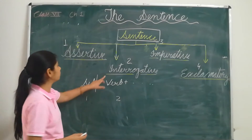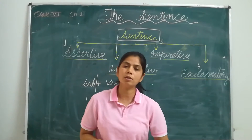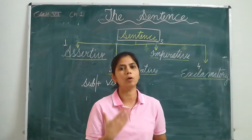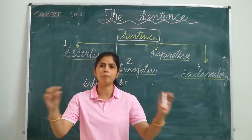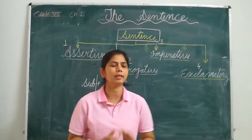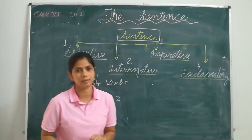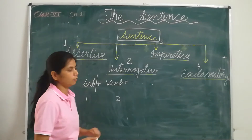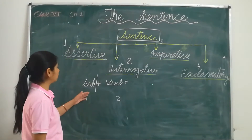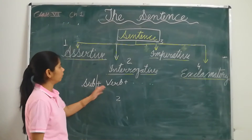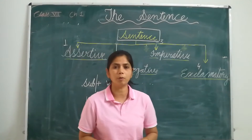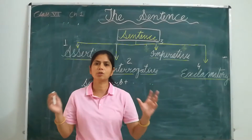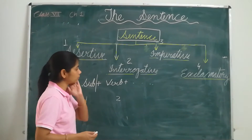Now the second type of sentences are interrogative sentences. We use interrogative sentences when we want to know something or ask something. When we ask something, we frame a sentence, and those types of sentences are called interrogative sentences. These interrogative sentences have a different structure than assertive. In an assertive sentence, the order of words is subject then verb.